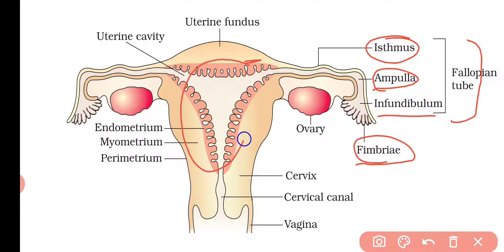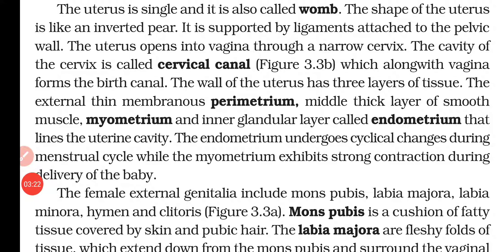After the fallopian tube we have the uterus, then the cervix, the cervical canal, and the vagina. The uterus is single and is also called the womb. Its shape is like an inverted pear, supported by ligaments attached to the pelvic wall. The uterus opens into the vagina through the narrow cervix, and the cavity of the cervix is known as the cervical canal, which along with the vagina forms the birth canal.